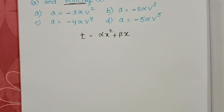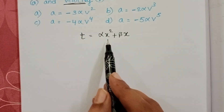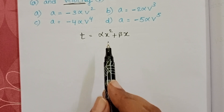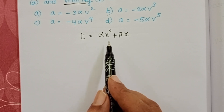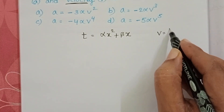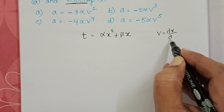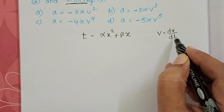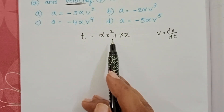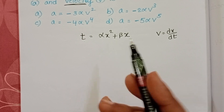First, differentiate the given equation with respect to time. We do this because the rate of change of displacement is called velocity — so to get velocity, differentiate the given equation with respect to time.